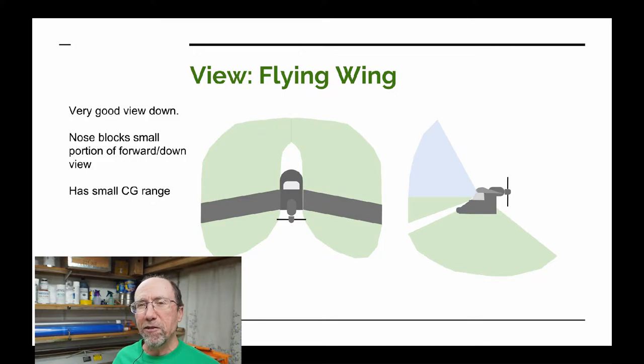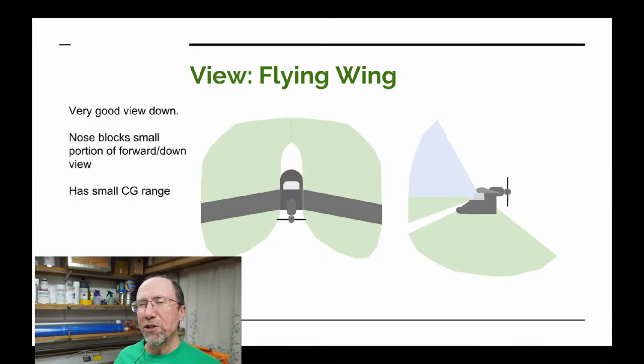Another configuration you don't see much of is the flying wing, and there have been a few designs using it. It has a great view looking down and around, like the pusher configuration. One of the drawbacks of the flying wing is a very small center of gravity range, which you have to be careful about. There are other advantages and disadvantages of the flying wing design that we may get to in a future video.